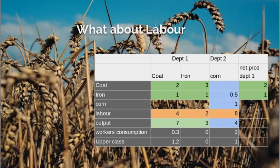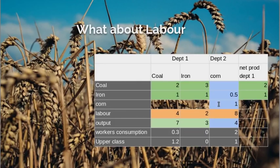But what about labour? You clearly can't have an industry without some labour going into it, and if there's going to be labour, people have to be fed. So you need at least one other industry here, which I'm calling the corn industry — it can stand in for all consumer goods industries. We now have a bigger input-output table: coal, iron, and corn.